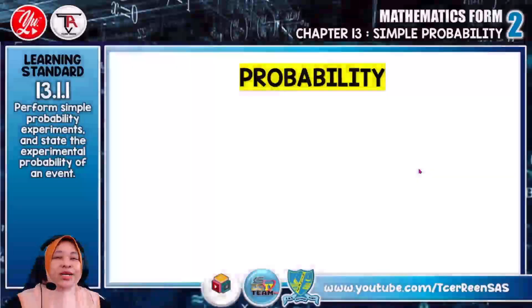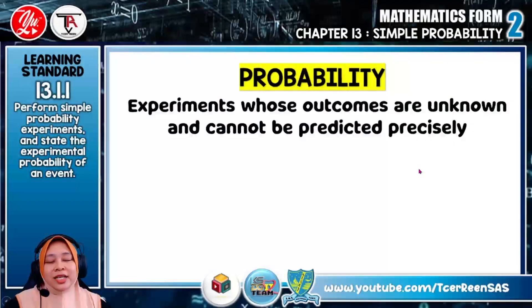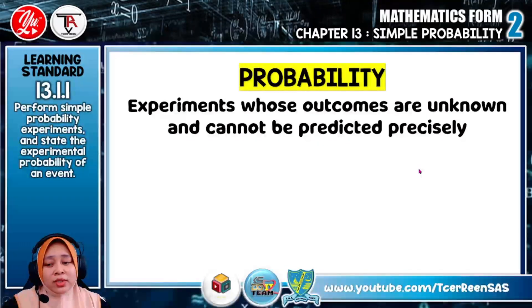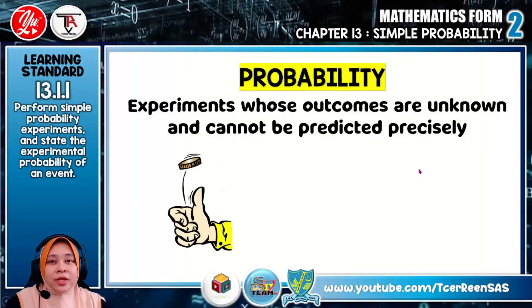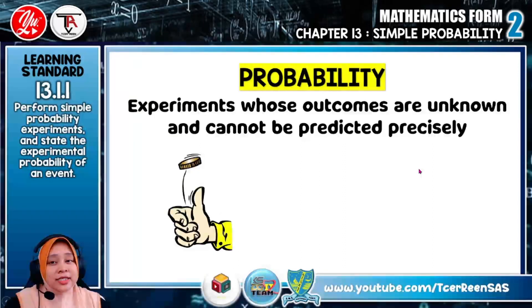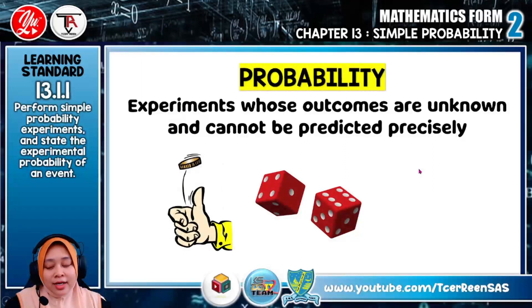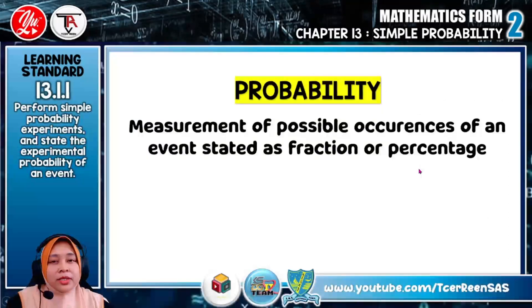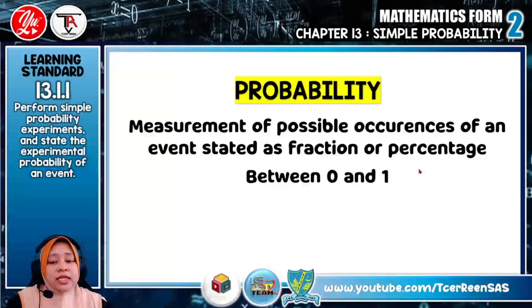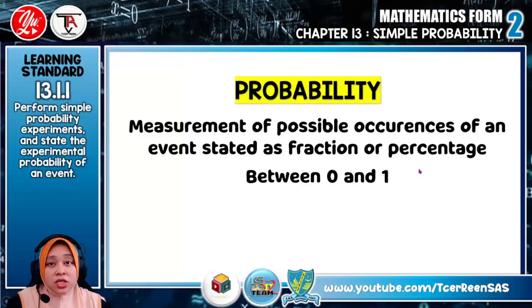Alright then, what is actually probability? Probability is the experiment whose outcomes are unknown and cannot be predicted precisely. For example, flipping a coin, throwing dices, and target shooting. Probability is also known as measurement of possible occurrence of an event, stated as fraction or percentage. The value of probability is between 0 and 1.